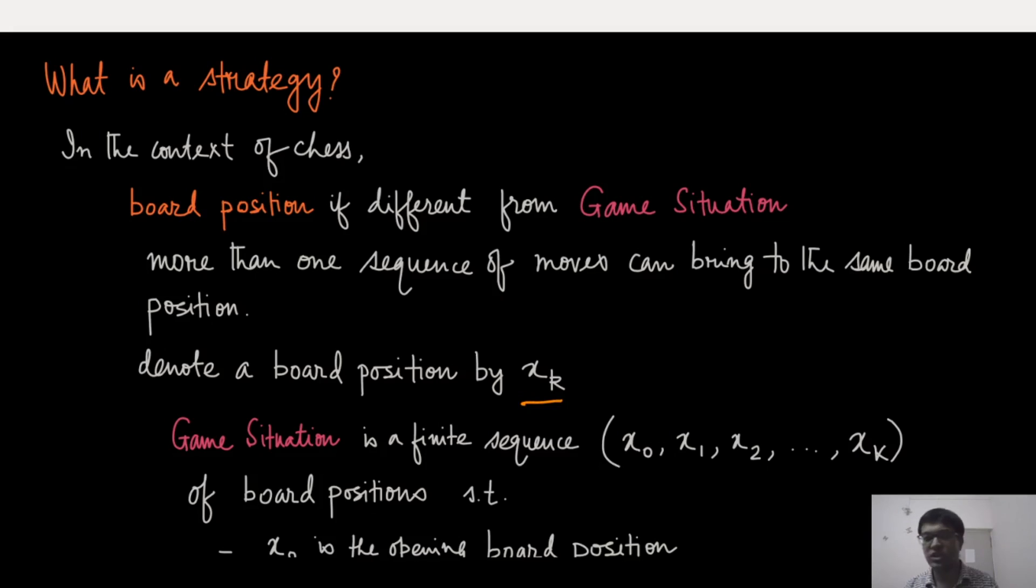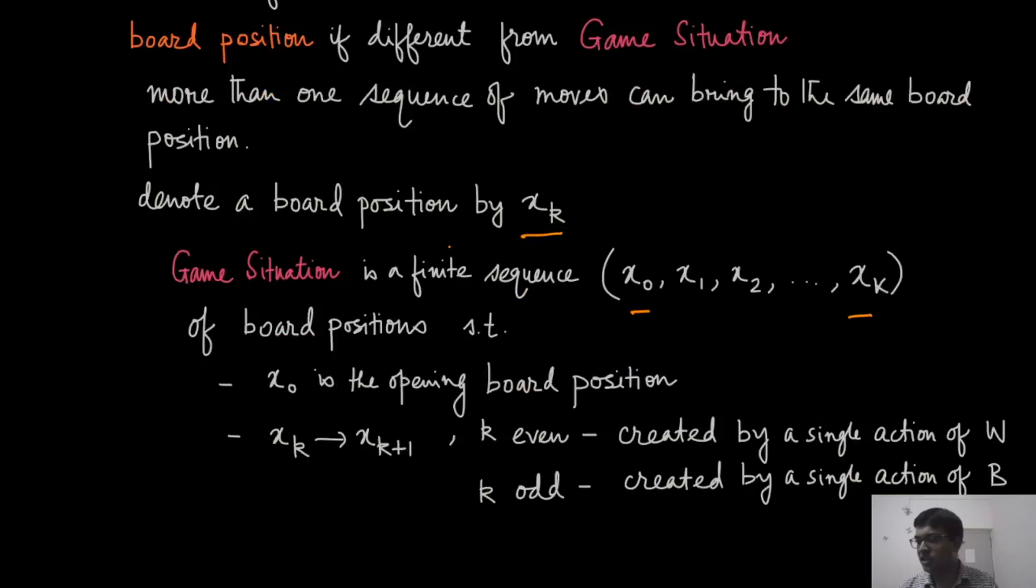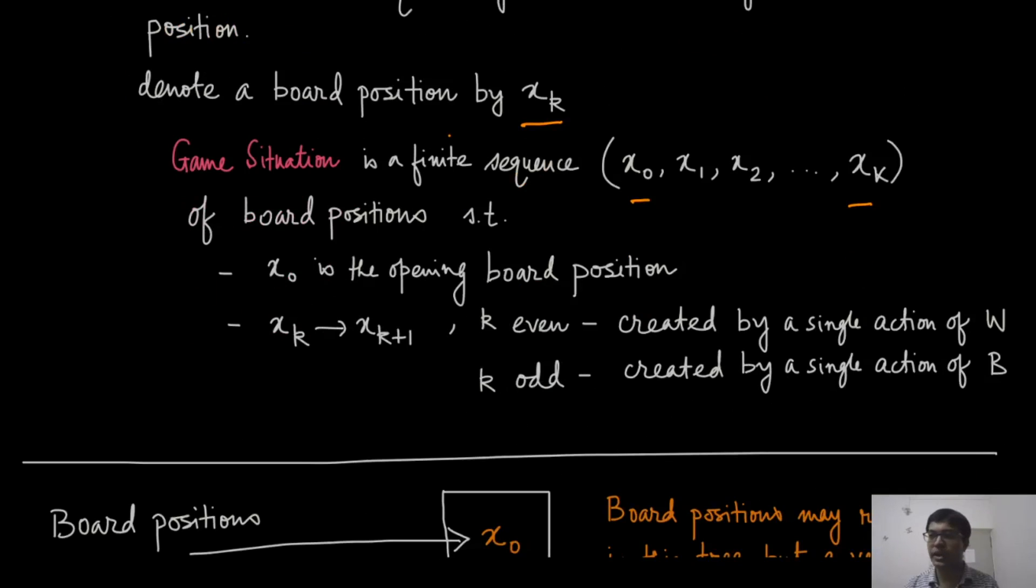So, let us denote the current board position, some board position with the notation x_k. And therefore, the game situation is a finite sequence, which starts from x_0 and after a series of board positions, it comes to x_k. And these board positions are such that x_0 is the opening board position, which is the first, the way you start playing the game chess. And then, whenever k is even, then x_k to x_{k+1}, this move is made by one single action of the white player. Similarly, if k is odd, that is created by the same single action of player B.